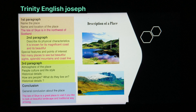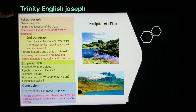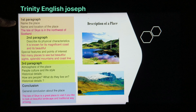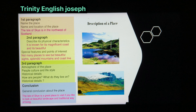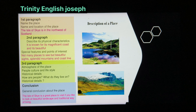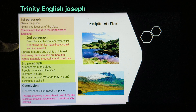If you look at the main thing of the description of a place: generally, in the first paragraph, you look at the name and location of the place. A small example I have given — The Isle of Skye is in the northwest of Scotland. Then we have tried to describe it. When you come to the second paragraph, describe its physical characteristics. For example, it is known for its magnificent coast — that is the physical characteristic.